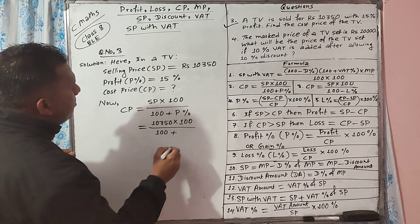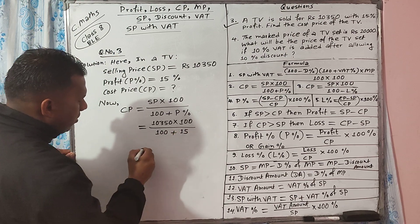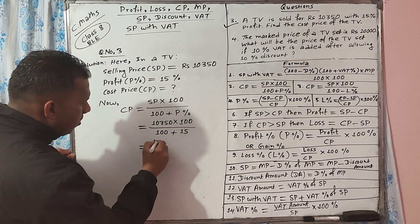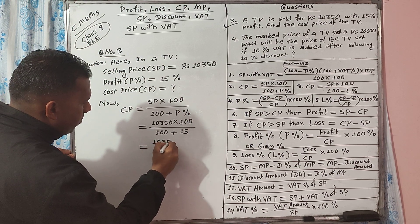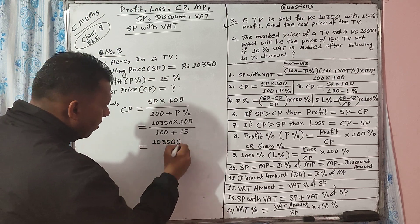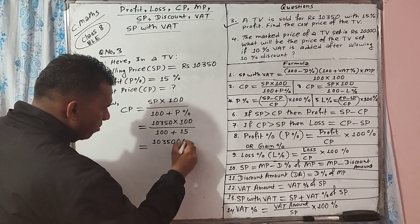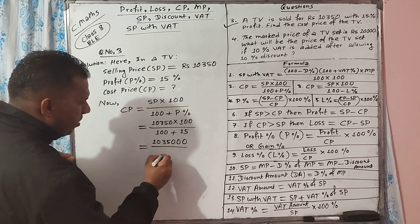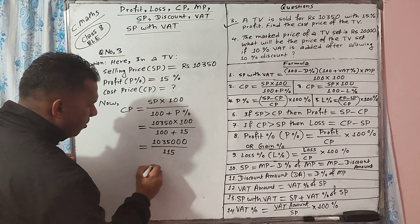The profit percent is 15, so 100 plus 15. This is equal to 10,350 multiplied with 100. It becomes 1,035,000, all upon 100 plus 15, that is 115.